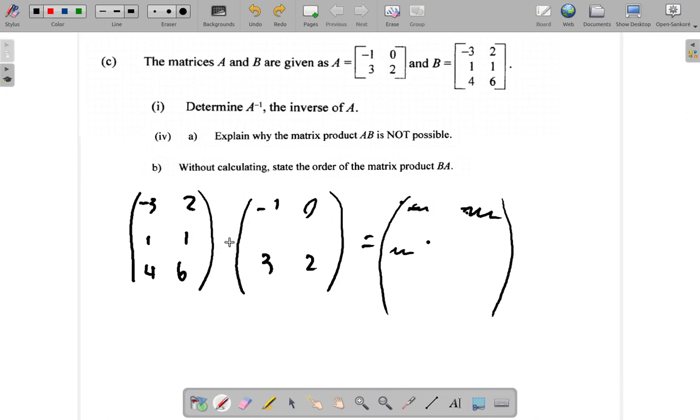But the exam question says 'without calculating.' So continuing, you have -1 by 0 plus 2 by 1, which gives you another number here. Then you have 4 by -1 plus 6 by 3, which gives you this number here. And 4 by 0 plus 6 by 2 gives you this number here.